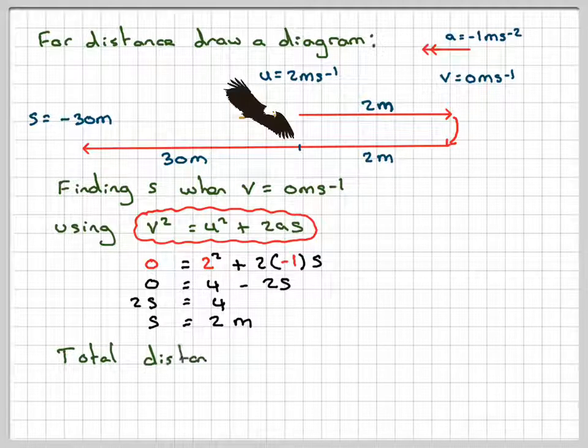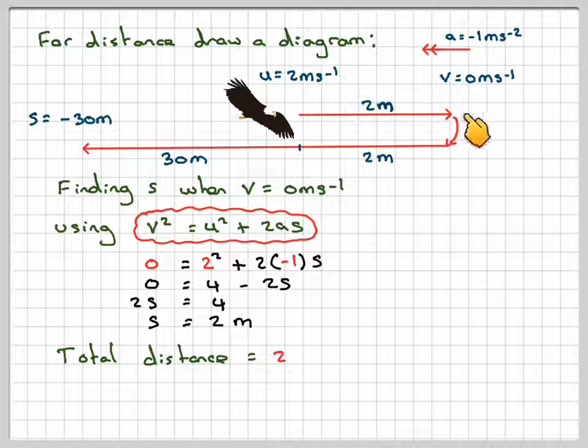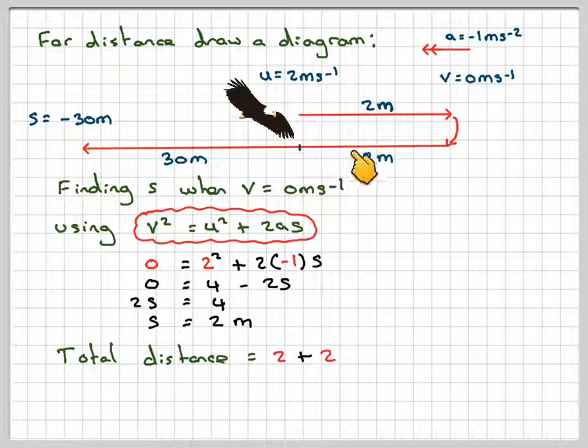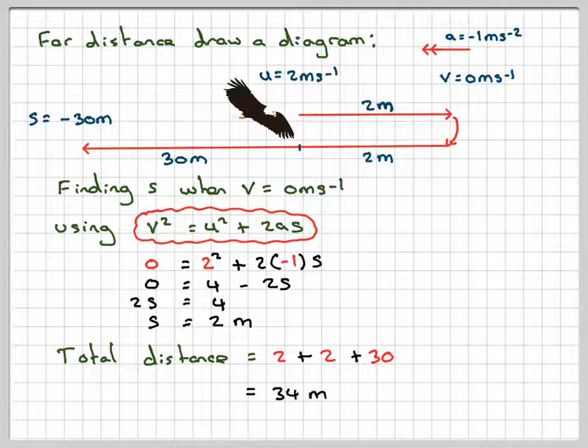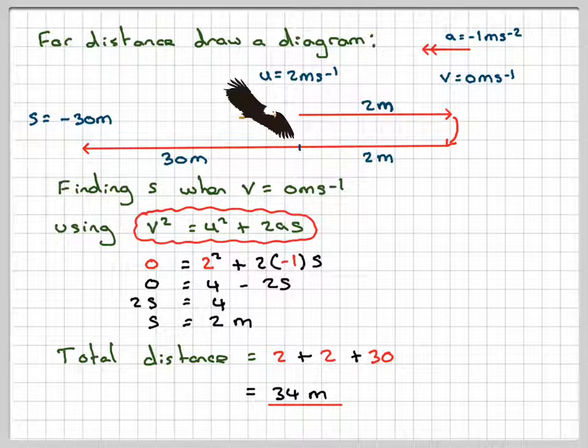Therefore, the total distance will be equal to 2, this distance, plus 2, this distance, plus 30, this distance, which gives me a total distance of 34 metres.